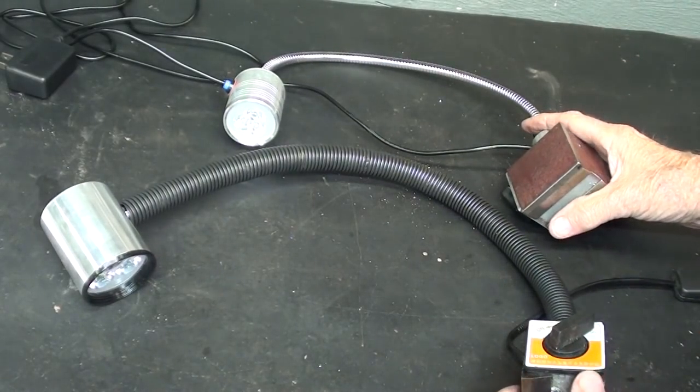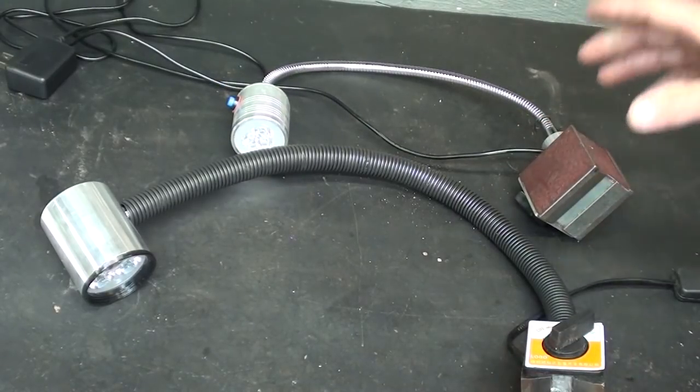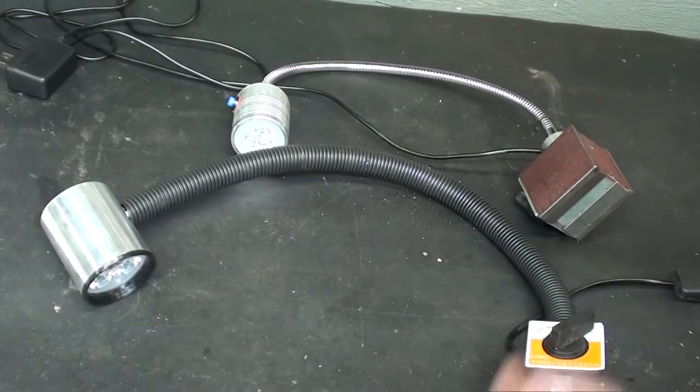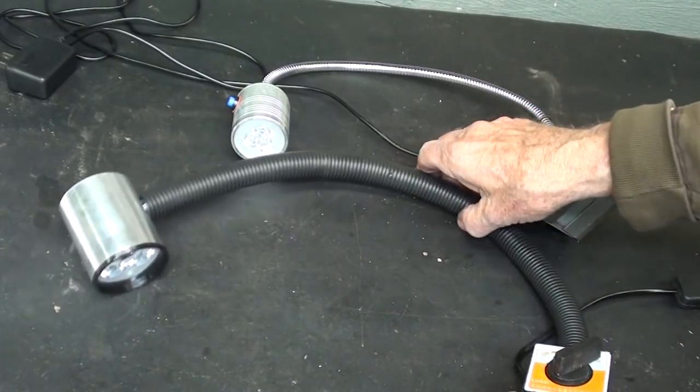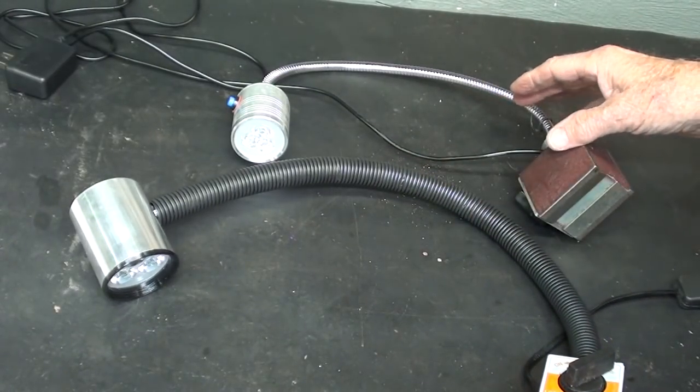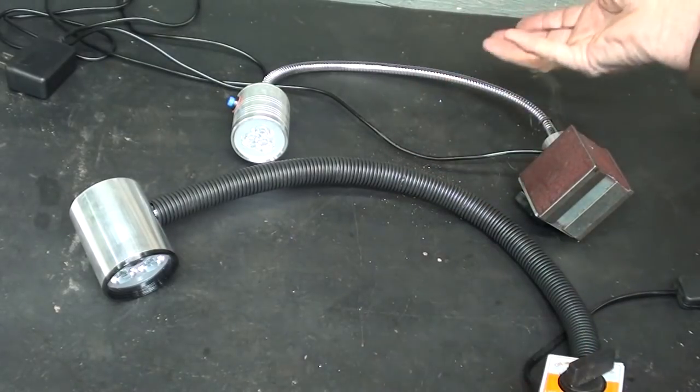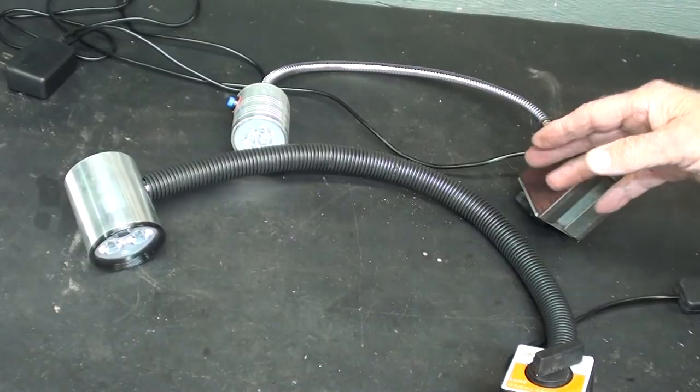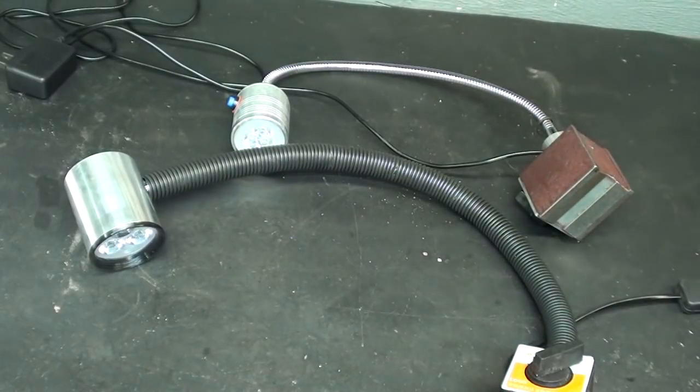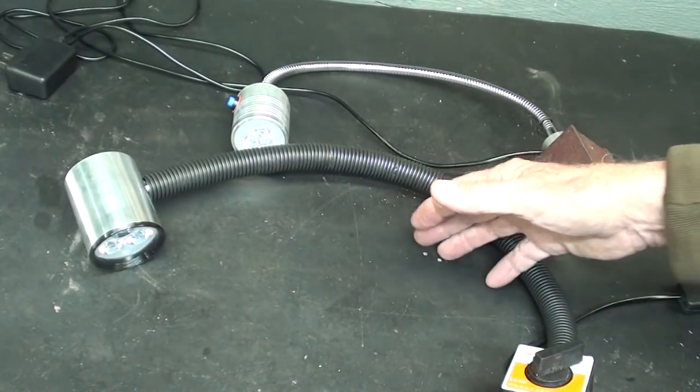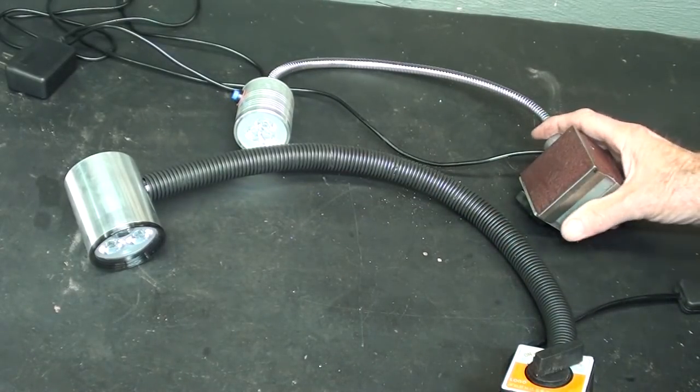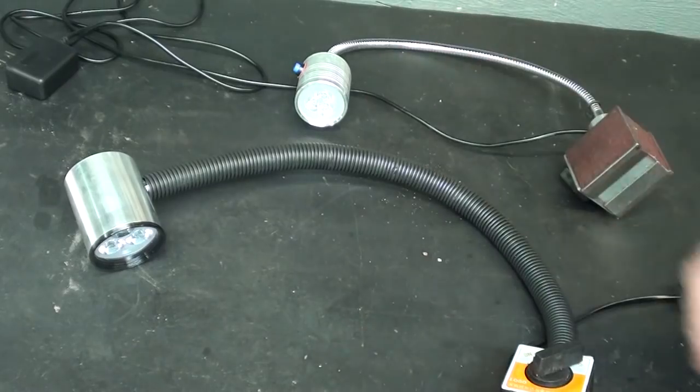Okay, here they are on the bench, and both of these lights came from Banggood in China. I did not pay for them. They gave them to me. I do not work for Banggood. I do not care whether you buy them from them or not. I will tell you this. I'm going to tell you the prices and give you the links in the description, but it will take you six weeks to get one. It just takes forever. It comes on a slow boat from China. Now let's look at them individually.